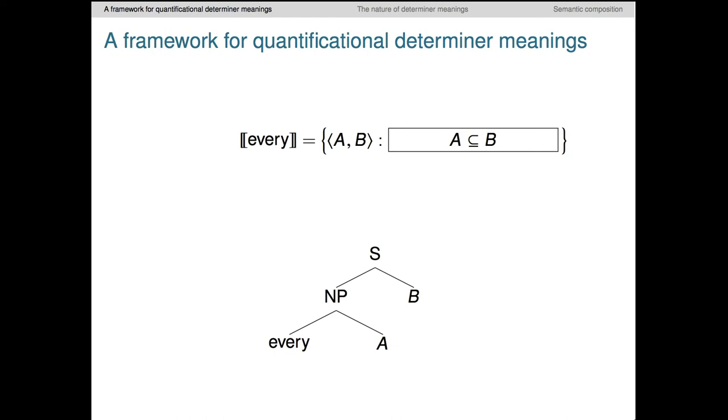Here's how we fill out the meaning for every. The constraint that every places on its arguments is that the first is a subset of the second. This is actually discussed informally in the entailment screencast. What we're seeing here is just a technical version of those ideas. Here's determiner a, which says that the intersection of its two arguments is non-empty. Here's determiner no, which does the opposite. It says that the intersection of its two arguments is empty.